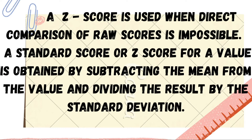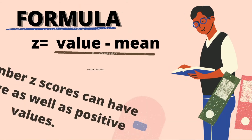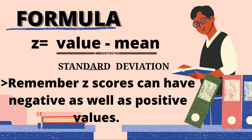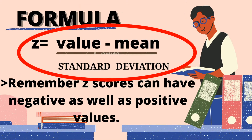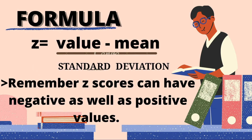A Z-score is used when the comparison of raw scores is impossible. A standard score or Z-score for a value is obtained by subtracting the mean from the value and dividing the result by the standard deviation. Now let's proceed to the Z-score formula. We're going to use this formula: value minus mean, all over the standard deviation.